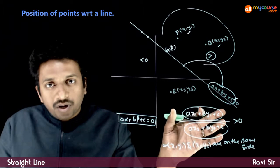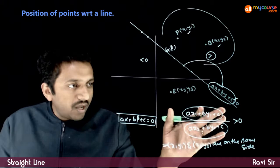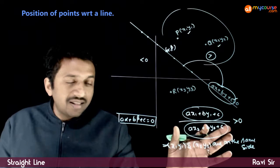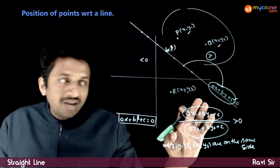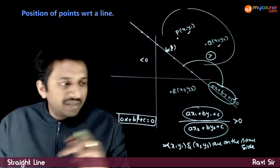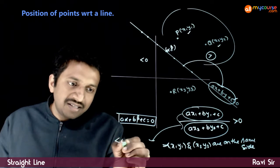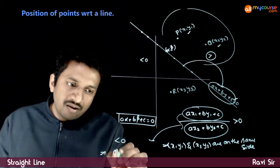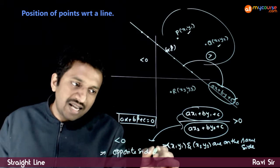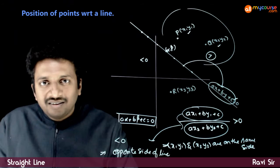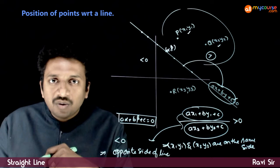If one expression gives you a positive number and the other gives you a negative number, the meaning is that these two points lie on the opposite side. So if the product of the two expressions is less than 0, the points lie on opposite sides of the line. Let us take a very brief example and examine how this works.